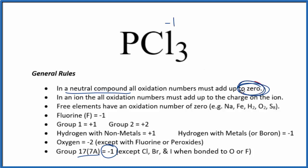Remember we said everything's going to add up to zero. Three times minus one, that's a minus three. Phosphorus has to be plus three for these numbers to add up to zero.